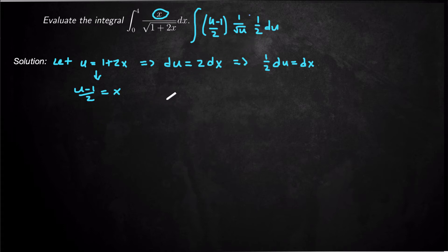Now all I have left to do is change the bounds. So I'll say if x equals 4, if x is equal to 4, then u, what happens to u? u is equal to 1 plus 2 times 4. So 1 plus 2 times 4, which is 1 plus 8, and that's 9.